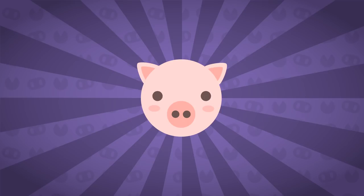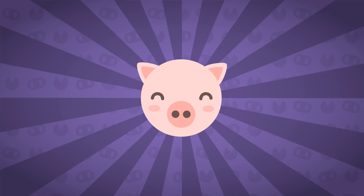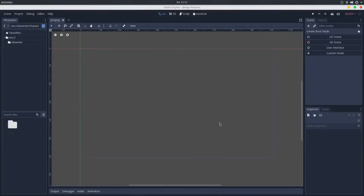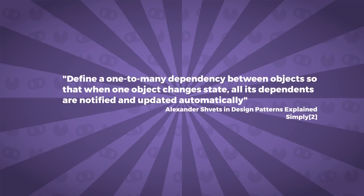In this series we'll see how these patterns can be, or are already implemented in Godot Engine, and in this video we'll talk about the Observer Pattern. A brief definition: it is a behavioral design pattern that lets you define a subscription mechanism to notify multiple objects about any events that happen to the object they are observing. It intends to define a one-to-many dependency between objects so that when an object's state changes, all its dependents are notified and updated automatically.